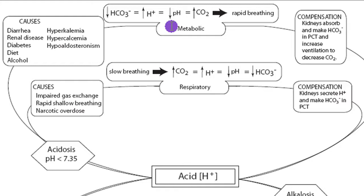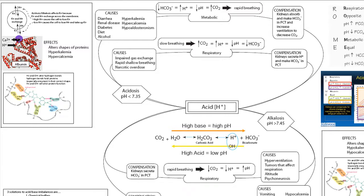Metabolic acidosis is generally caused by a loss of bicarbonate or a decrease in bicarbonate. This can happen in diarrhea because everything moves through the GI system too fast to absorb bicarbonate — if bicarbonate goes down, acid goes up. Renal disease can also cause bicarbonate loss. In diabetes, lack of glucose results in fat metabolism producing ketoacids, which cause acidosis. Hyperkalemia or hypercalcemia both lead to acidosis due to potassium-hydrogen exchange across cell membranes. A diet high in acid or alcohol consumption can also lead to acidosis.